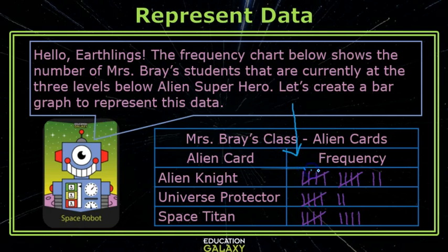This means 1, 2, 3, 4, 5. So Alien Knight has 12. Universe Protector has 7. And Space Titan has 9.